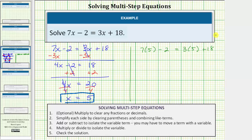And now we'll simplify both sides. So we multiply first, 7 times 5 is equal to 35. So on the left we have 35 minus 2 equals, on the right, 3 times 5 is 15, we have 15 plus 18. Well 35 minus 2 is equal to 33, and 15 plus 18 is equal to 33. 33 equals 33 is true, verifying the solution x equals 5 is correct. I hope you found this helpful.